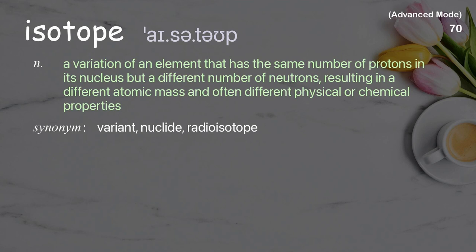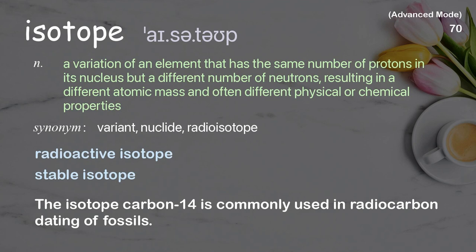Isotope: A variation of an element that has the same number of protons in its nucleus, but a different number of neutrons, resulting in a different atomic mass and often different physical or chemical properties. Examples: Radioactive isotope, Stable isotope. The isotope carbon-14 is commonly used in radiocarbon dating of fossils.